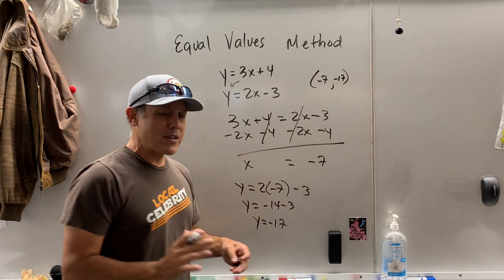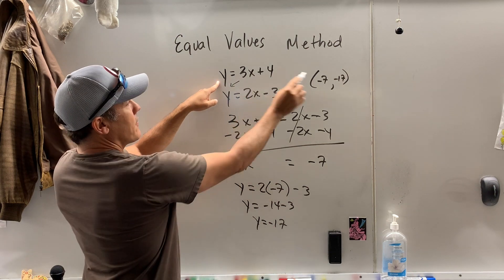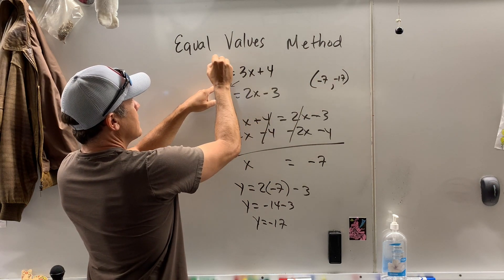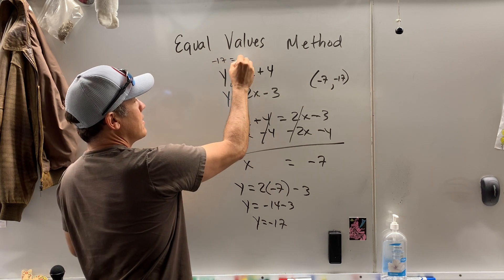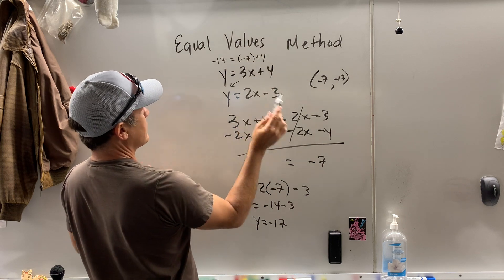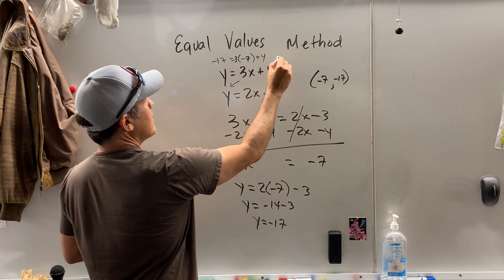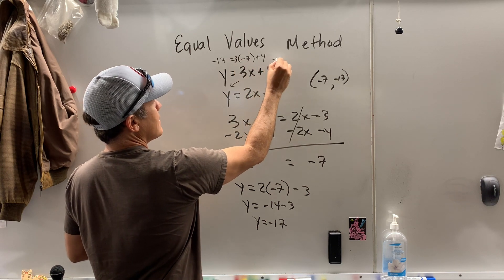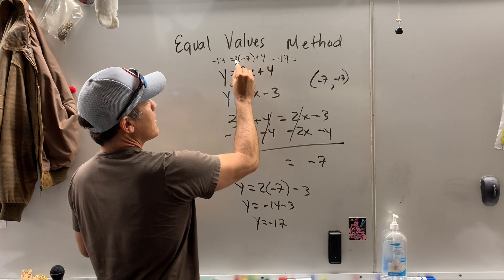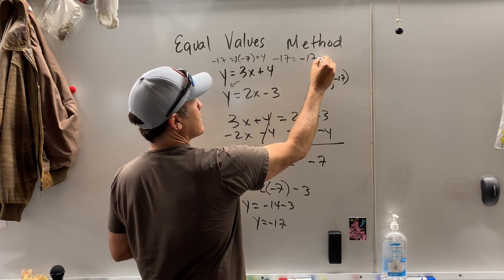Now, I'm pretty confident that's correct. But let's just double check my answer. If I take negative 17 and pop it in there, does that equal 3 times negative 7 plus 4? Something doesn't feel right. Oh, 3 times negative 7 plus 4. Well, what is, can you see it? Negative 17. Three times, that is negative 21 plus 4 is negative 17. It checks.